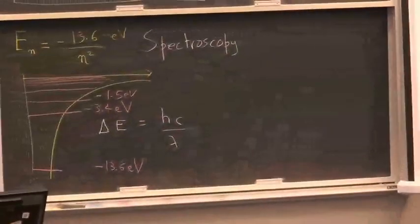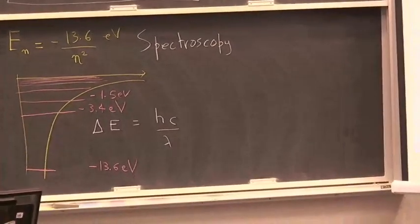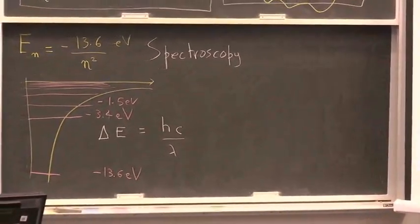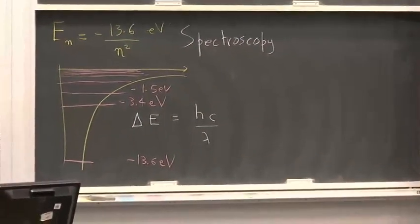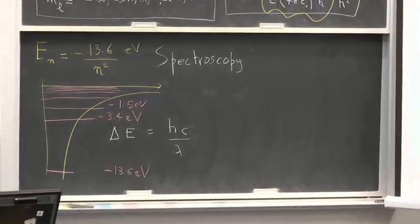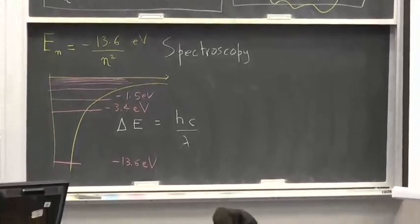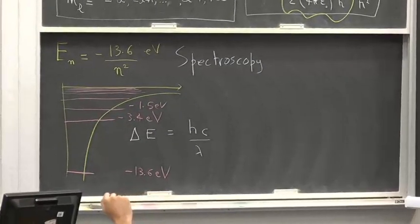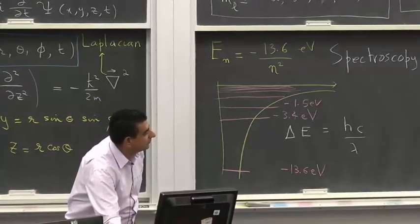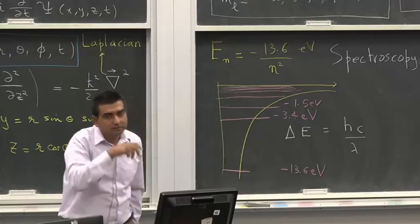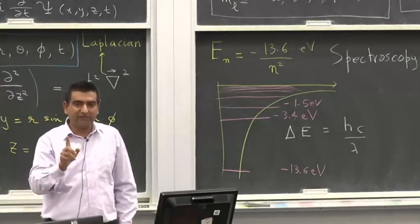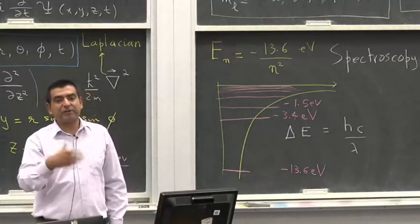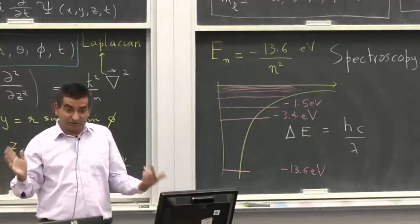A student asks: if the radial function R depends on n and l, why does the energy depend only on n? The answer is that for a single-electron atom in a central potential, when you solve the Schrödinger equation the energy turns out to be only a function of n. If you have a multi-electron atom, the energy will also depend upon l as well.